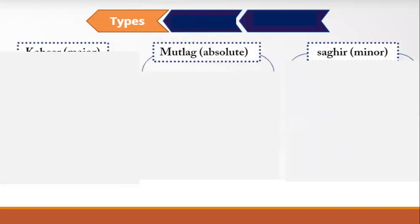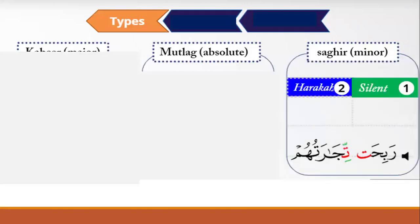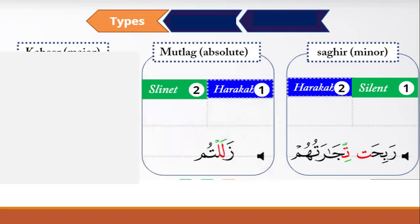The types of mutamathilan are three: صغير (minor), مطلق (absolute), and كبير (major). صغير means the first letter is silent (sakin) and the second letter has a vowel (harakah). For example: راضي ربيحة تدارتهم. مطلق means the first letter has a harakah and the second letter is silent, like زللتم.